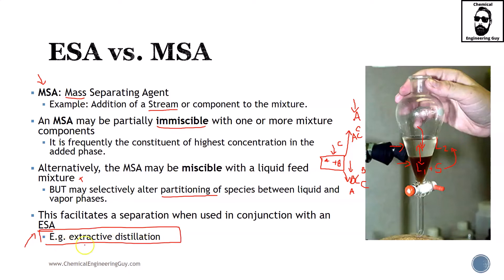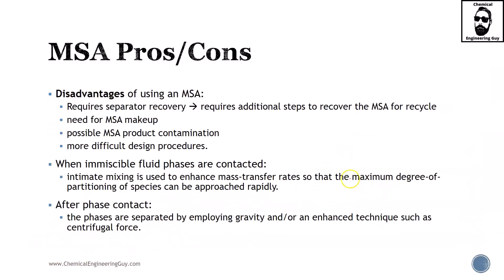For instance, extractive distillation uses both energy and mass separating agents in order to ensure the extraction and separation of the components.